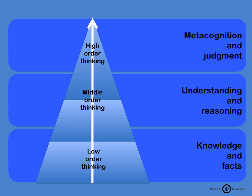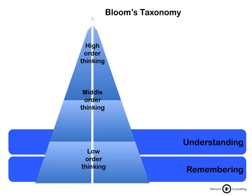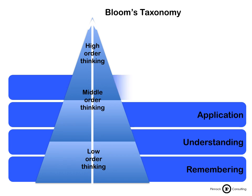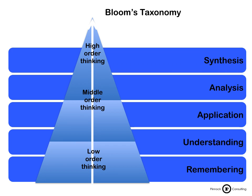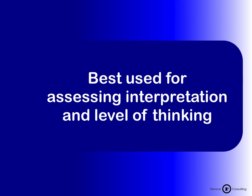The most popular and well-known taxonomy is Bloom's taxonomy, which is based on six cognitive levels — in some cases more have been added, but mostly we use six. They range from lower order to higher order thinking skills and are very heavily based on verbs. Starting from the bottom: remembering, then understanding, then applying, then analyzing, then synthesizing, and the highest level is evaluating. Evaluation is about metacognition — you're reflecting on your own thoughts, making judgment calls, and being able to tell others about it. Bloom's taxonomy is best used for assessing interpretation and levels of thinking.